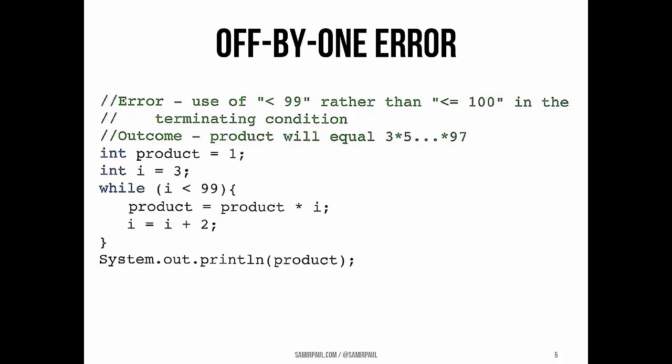Here, it's actually pretty obvious, though, what's happening. We can see that our loop doesn't run for i equals 99, even though i should be part of this product.